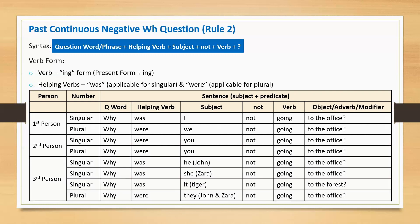Third person singular: Why was he not going to the office? Instead of pronoun 'he', we can use the name — Why was John not going to the office? Why was she not going to the office? Using her name — Why was Zara not going to the office? Why was it not going to the forest? If referring to an animal, say tiger — Why was tiger not going to the forest?